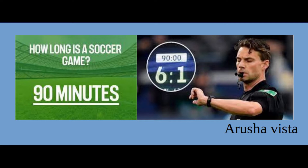Additional time was introduced because of an incident which happened in 1891 during a match between Stoke and Aston Villa. Trailing 1-0 and with just 2 minutes remaining, Stoke were awarded a penalty. Villa's keeper kicked the ball out of the ground, and by the time the ball had been recovered, the 90 minutes had elapsed and the game was over. The rule also stated that the duration of either half is extended until a penalty kick to be taken is completed.